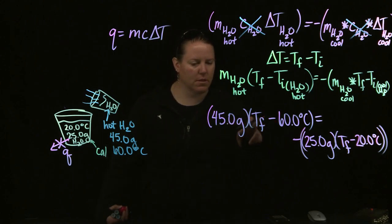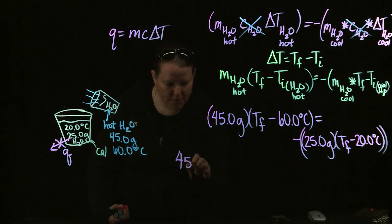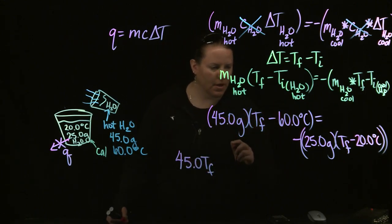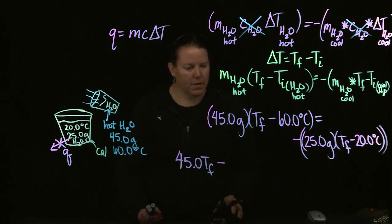So I'm going to distribute the 45 over both components of that. 45.0, and I'm going to get rid of the units because I'm not caring about those as much.